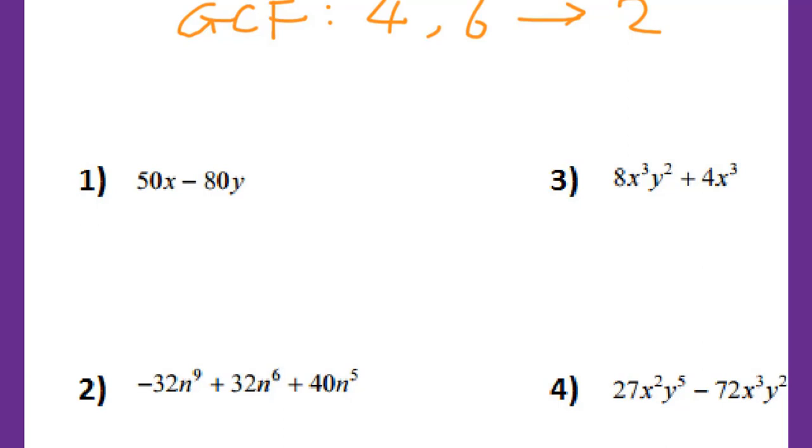GCF for variables will be the variable with lowest exponents. For example, if you have x third power, then x sixth power, and x like a fifth power, the GCF will be x third power. Always look for the lowest exponents.